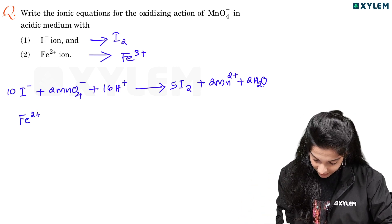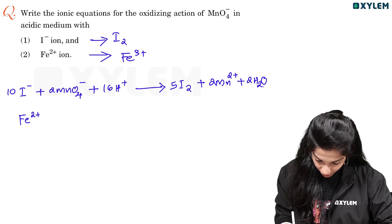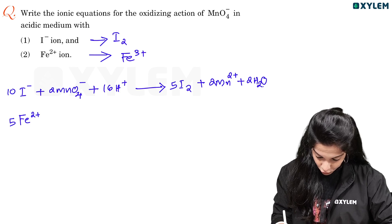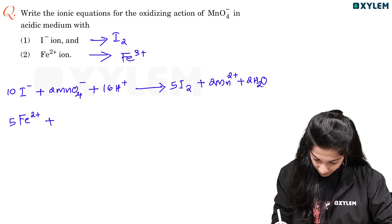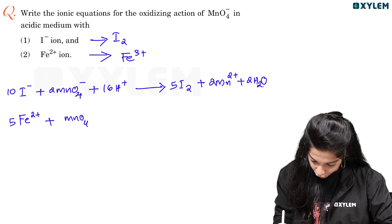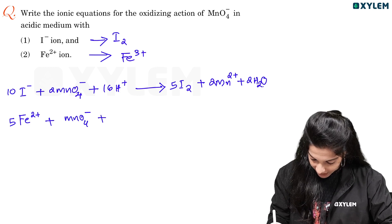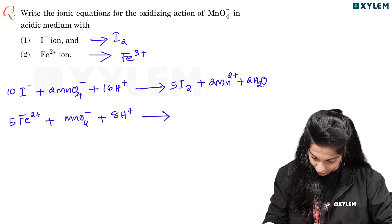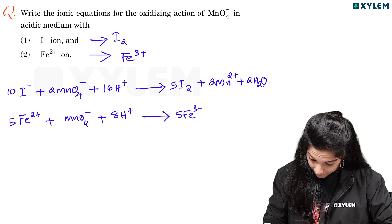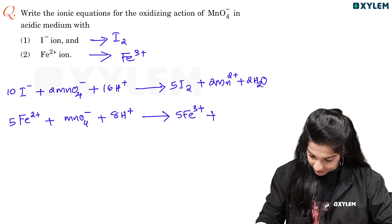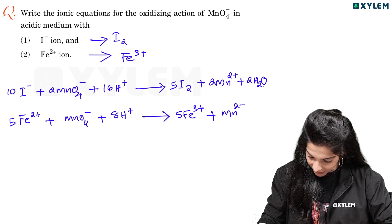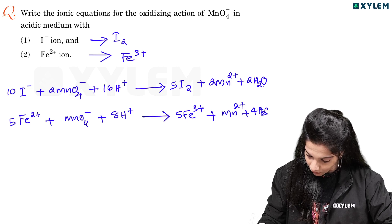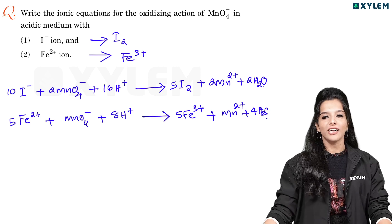Fe2+ — 5 Fe2+ plus MnO4- in acidic media, 8 H+ gives 5 Fe3+ plus Mn2+ plus 4 H2O. This is the reduction stage. We already have to learn how to do this, and we are going to discuss it. This method is very easy.